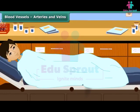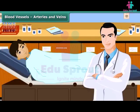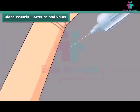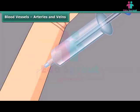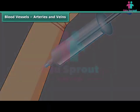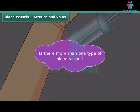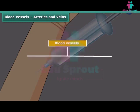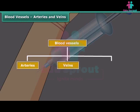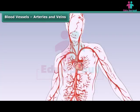Once when Rahul was unwell, his doctor recommended a blood test. The technician collecting blood samples first checks for a particular kind of blood vessel to prick and collect the blood. There are three types of blood vessels in our body: arteries, veins, and capillaries. Arteries are blood vessels with thick walls that carry oxygenated blood from the heart to all the other parts of the body.